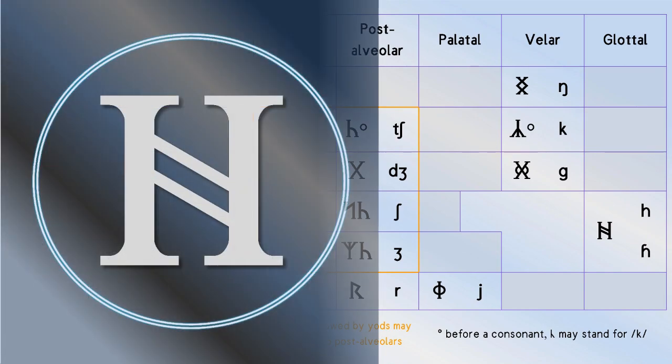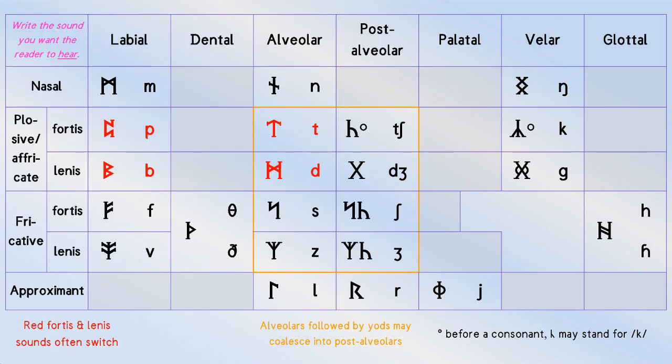Hale typically makes the fortis h sound, but in some dialects it allophonically makes its lenis equivalent in words like behind. Hopefully that won't cause anyone any problems though.